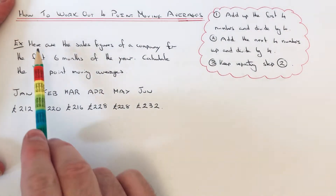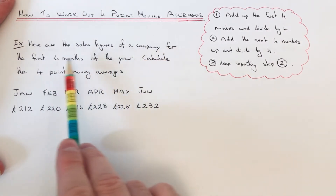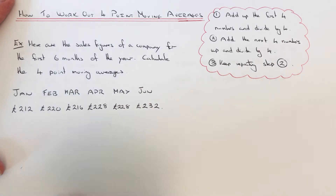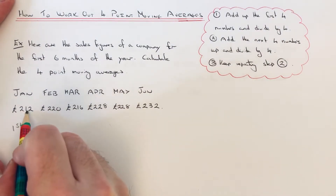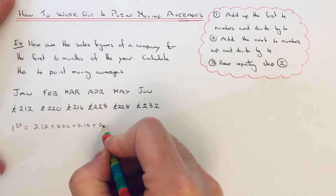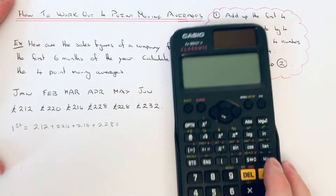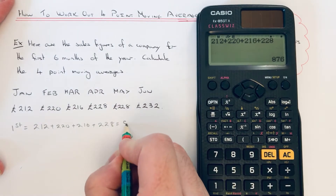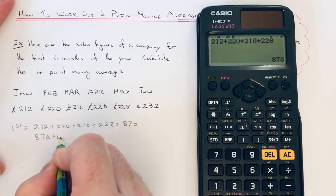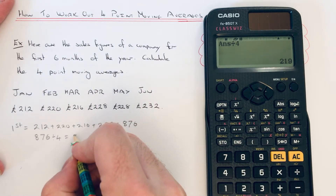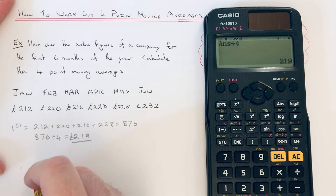So let's have a look at the example here. Here are the sales figures for a company for the first six months of the year, and I've got to calculate the four point moving averages. To get our first one, we add up the first four numbers: 212, add 220, add 216, add 228. It's best to work this out first before you divide by four. Our total is 876, and dividing that by four gives us the first four point moving average: 219 pounds.